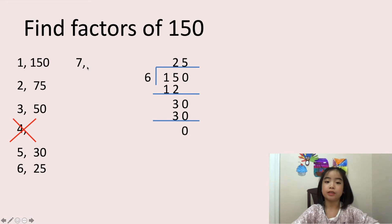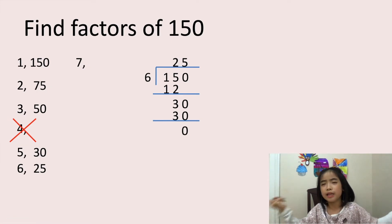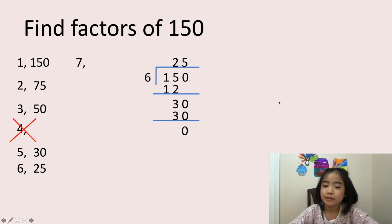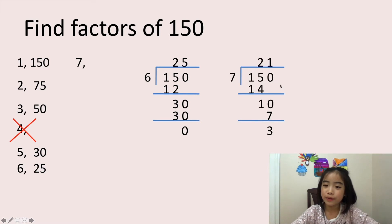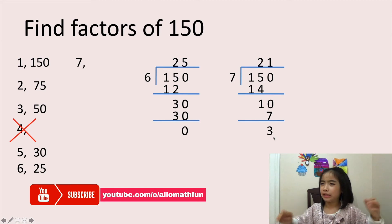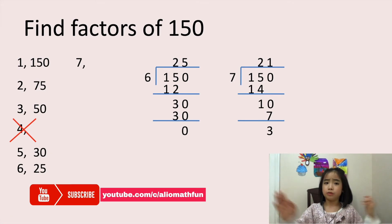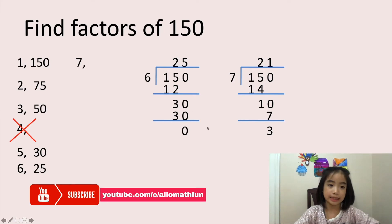Now let's move on to 7. Is 7 a factor of 150? This is interesting. Let's take a look. 150 divided by 7 equals 21 with a remainder of 3. So there is a remainder of 3, and we want no remainder. So 7 is not a factor of 150. Let's cross this one out.